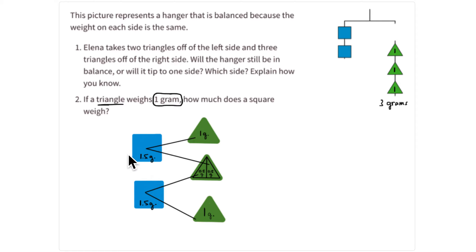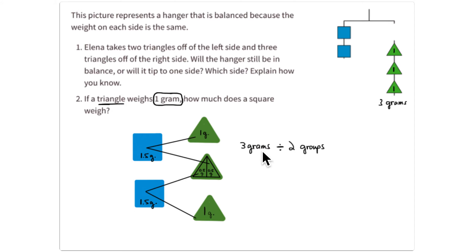So that means one blue square is going to equal one and a half grams. Another way to look at that is three grams, so the three triangles divided among two groups or two squares. Three divided by two is three halves, which is equal to one and a half grams. So three divided by two is three halves, so three halves grams per square. A blue square is equal to three halves or one and a half, and in each case they would be grams as the unit.